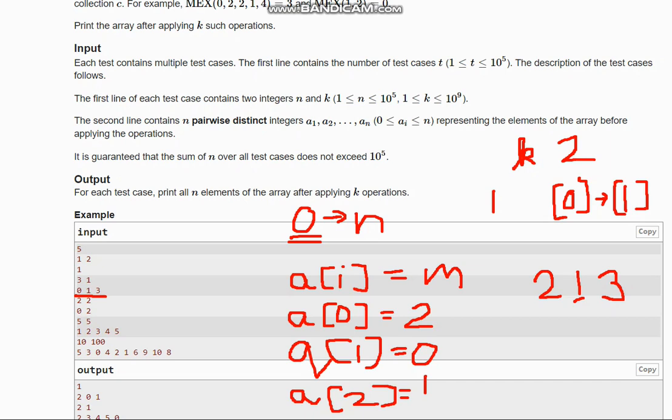You just need to iterate from 0 to n for every k operation and find the MEX value like this. After finding the MEX value, you can update the MEX value in the array and then again calculate the MEX value for the next array. So hope you all understand this solution. Thanks for watching.